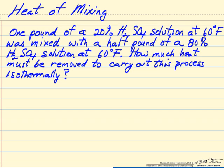In this example, we're looking at using heat of mixing information because we're going to mix a pound of 20% sulfuric acid with a half pound of 80% sulfuric acid. They're both at 60 degrees and the question is how much heat do we need to remove from this system so that the final mixture is also at 60 degrees Fahrenheit.